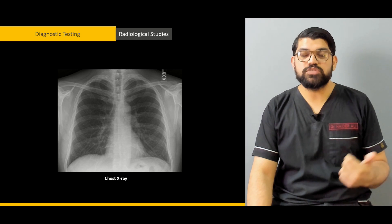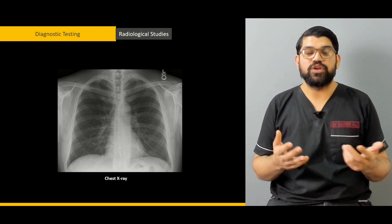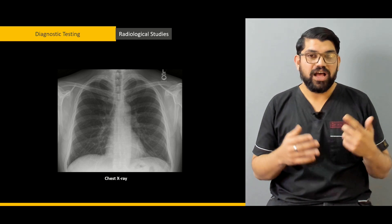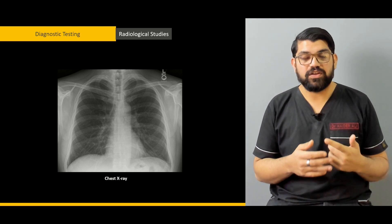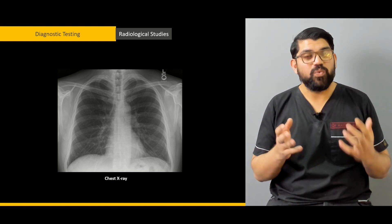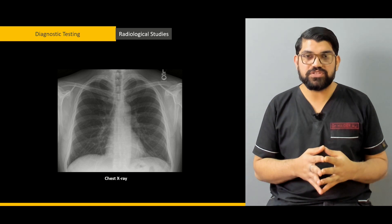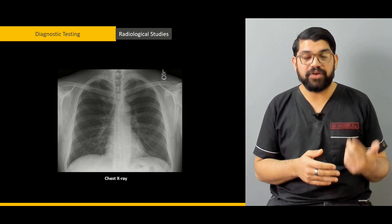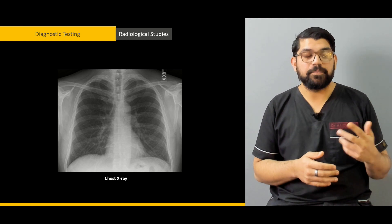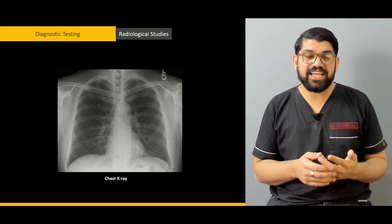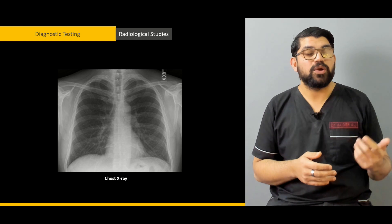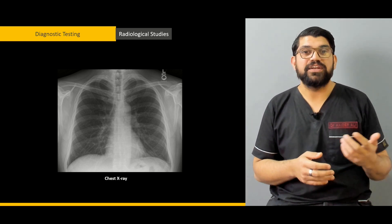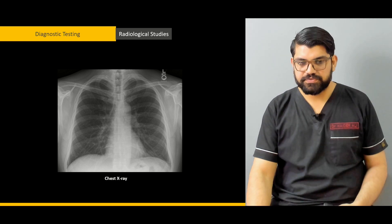Moving on to radiological studies, which includes X-ray — what to look for — ultrasound and its diagnostic modalities, when ultrasound is used, then CT scan, CT brain, nucleoid scan if required, X-ray KUB, and X-ray for erect abdomen. All of these will be discussed in detail under this section.